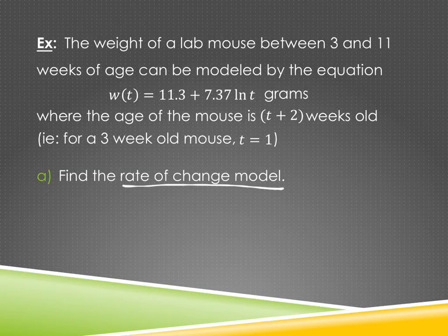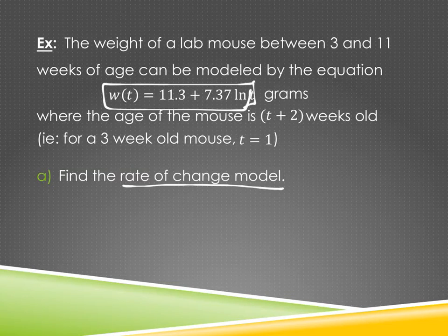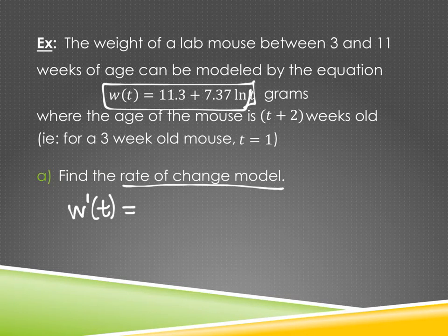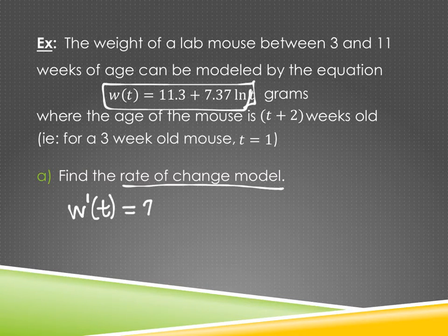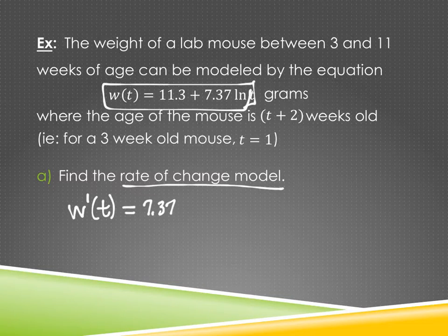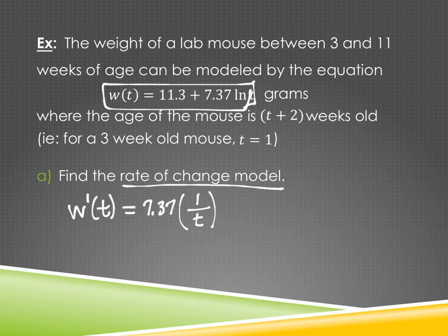So what would the derivative of this function be? Starting out, it would need to do w prime of t, correct? All right. So what would the derivative of the 11.3 be? Zero. How about when we get to the 7.37 natural log t? 7.37 times what was that, Kendra? Is it still 1 over x or 1? Well, they're used to t, so we'll stick with t. If you switch it to x, just make sure all of them change to x in the problem. All right. Or if you really have a hankering to write it differently, you can write it like this. It's the same thing, right? 7.37 divided by t would be the same thing as 7.37 times 1 over t.